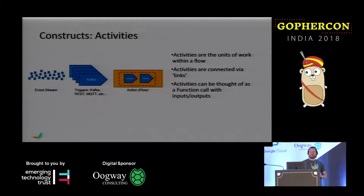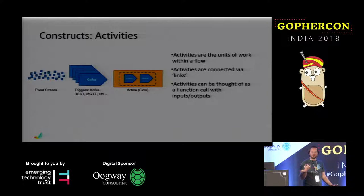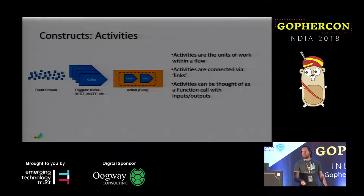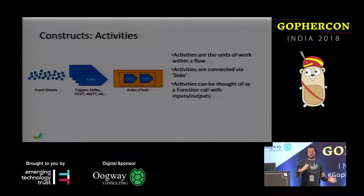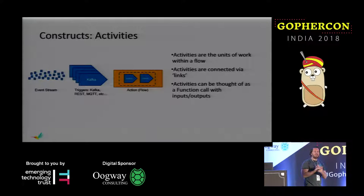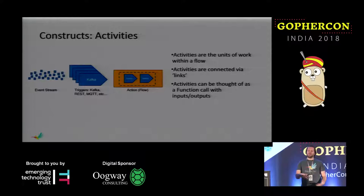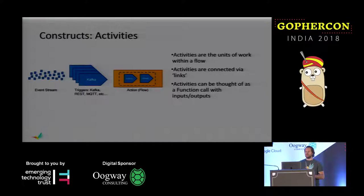Another key construct is an activity. An activity is the unit of work within a flow. An activity is nothing more than an eval function — all it is, is an eval function. It implements a specific interface. It's also part of our contribution model. Part of our contribution model is a metadata definition of the activity itself. If you imagine an activity as a function, the function must have inputs and it must have outputs. Those inputs and outputs are defined via metadata definitions, and they're exposed in code as simply interfaces. The metadata dictates how you typecast the object specifically.